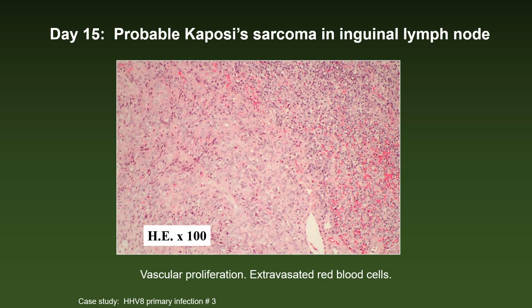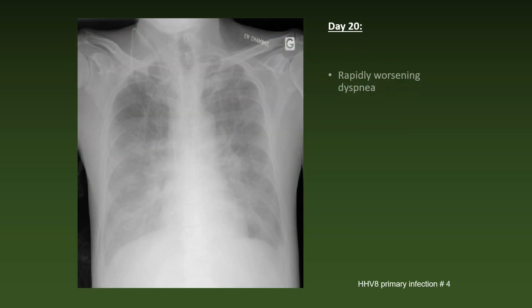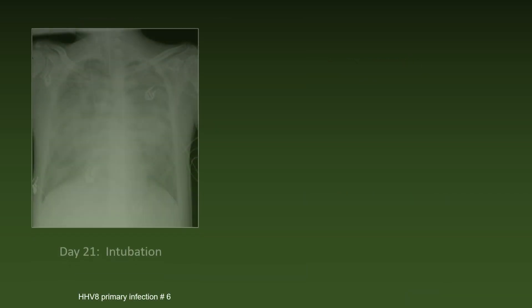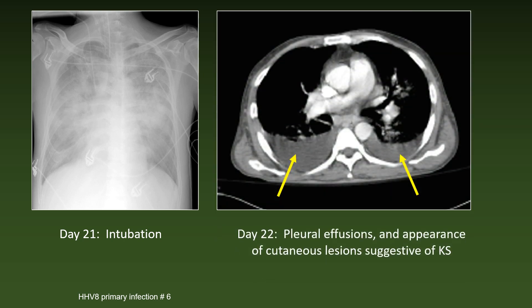On day 15, he underwent a biopsy of an inguinal lymph node, which showed vascular proliferation and extravasated red blood cells, interpreted as probable Kaposi's sarcoma. On day 20, he had rapidly worsening dyspnea. The bronchoalveolar lavage was not informative because no infectious agents were visible on gram and acid-fast stains. After the bronchoalveolar lavage, the patient did not do well and had to be intubated. Pleural effusions appeared, as well as cutaneous lesions suggestive of KS.